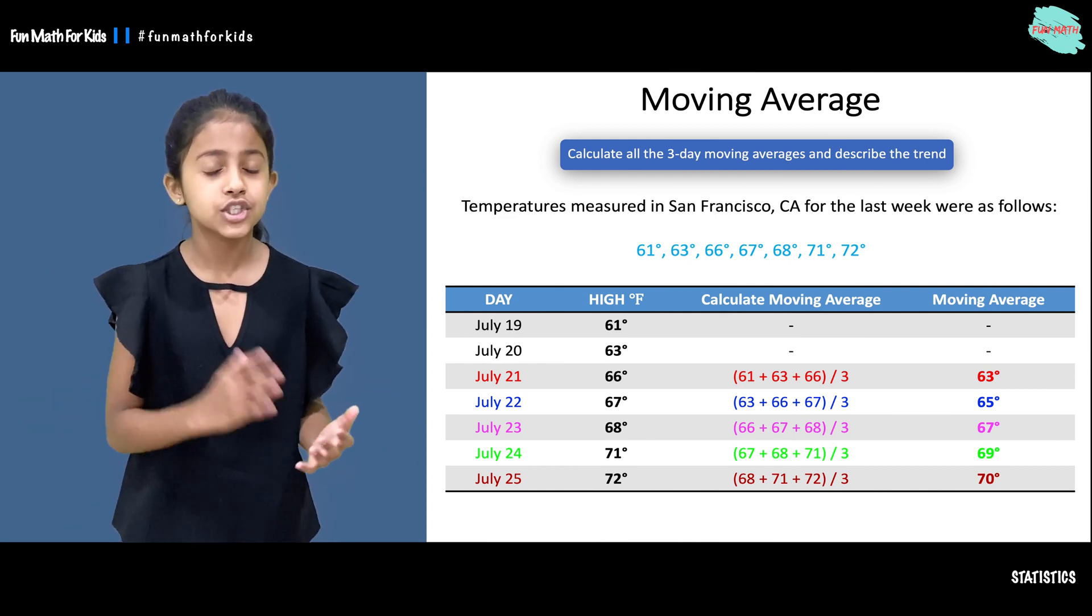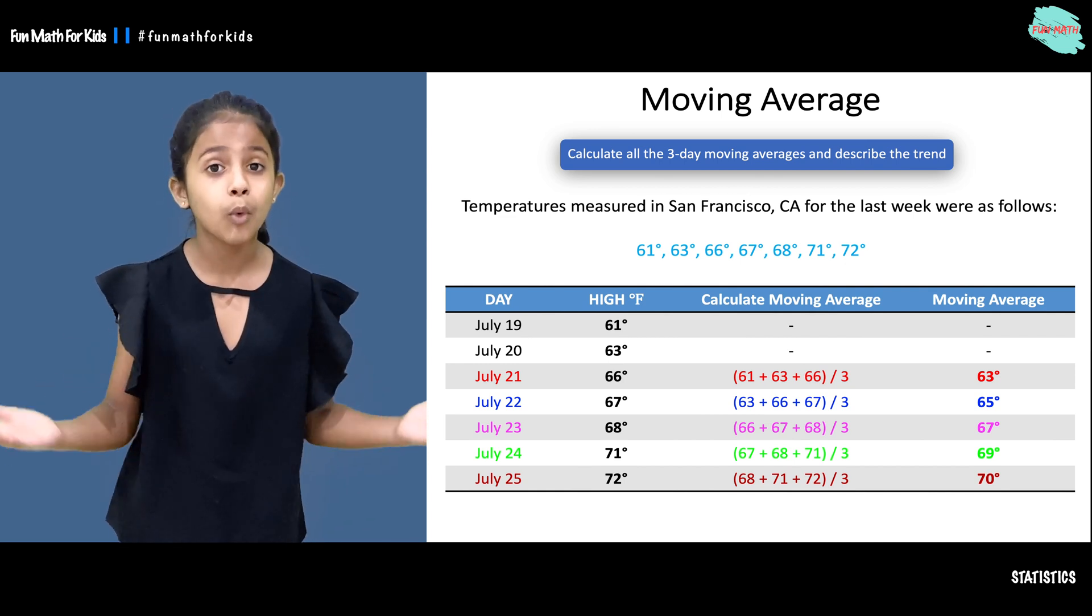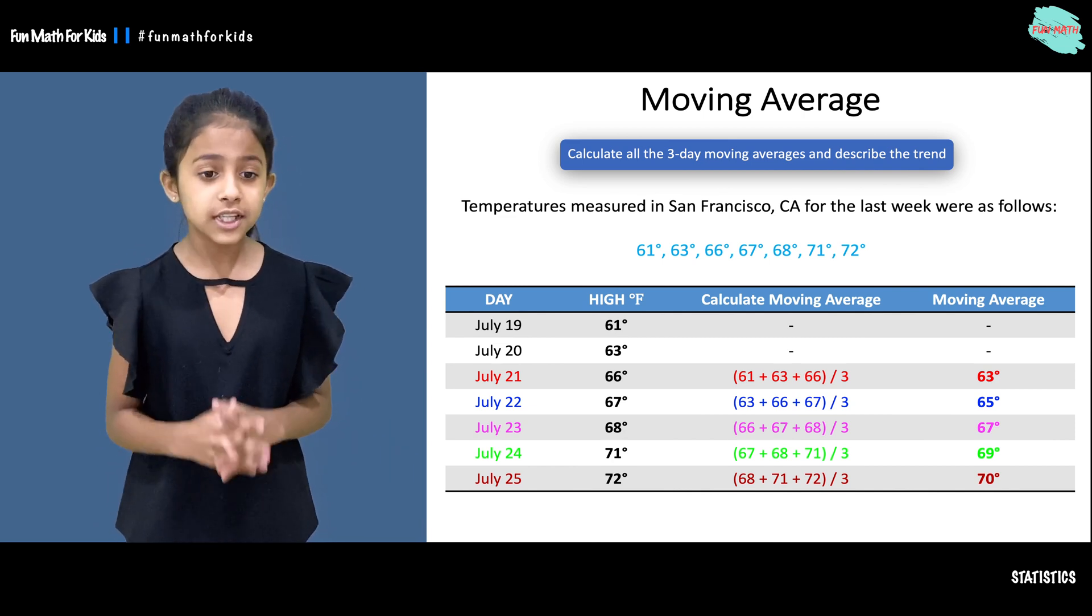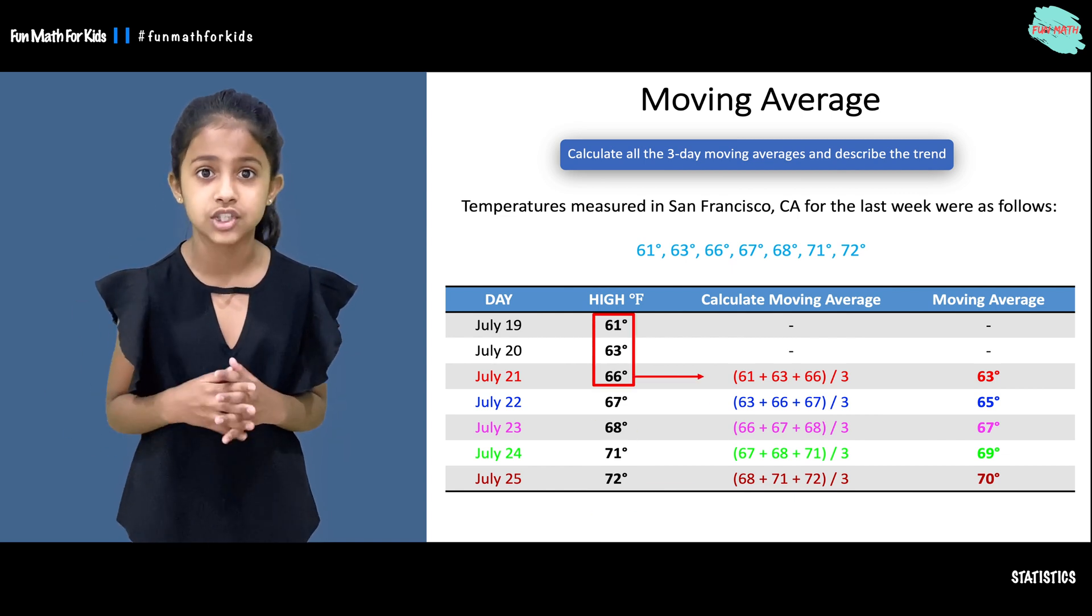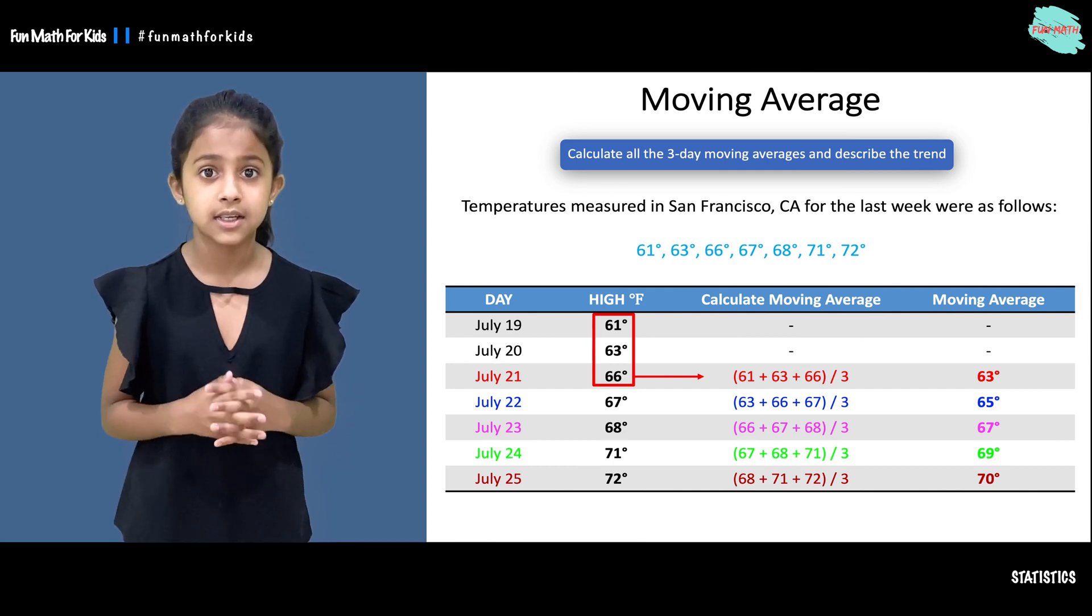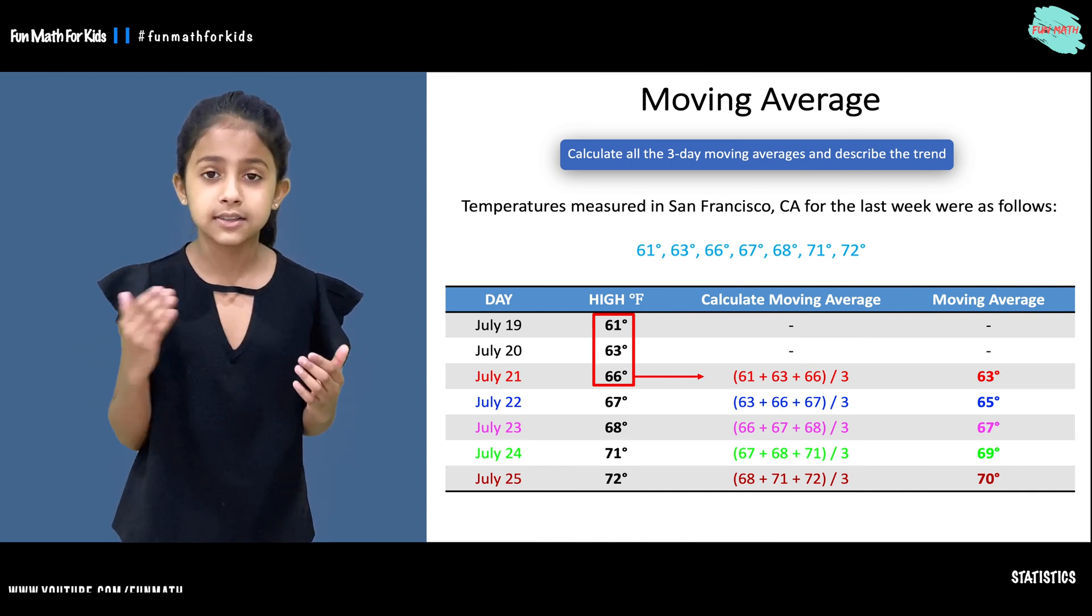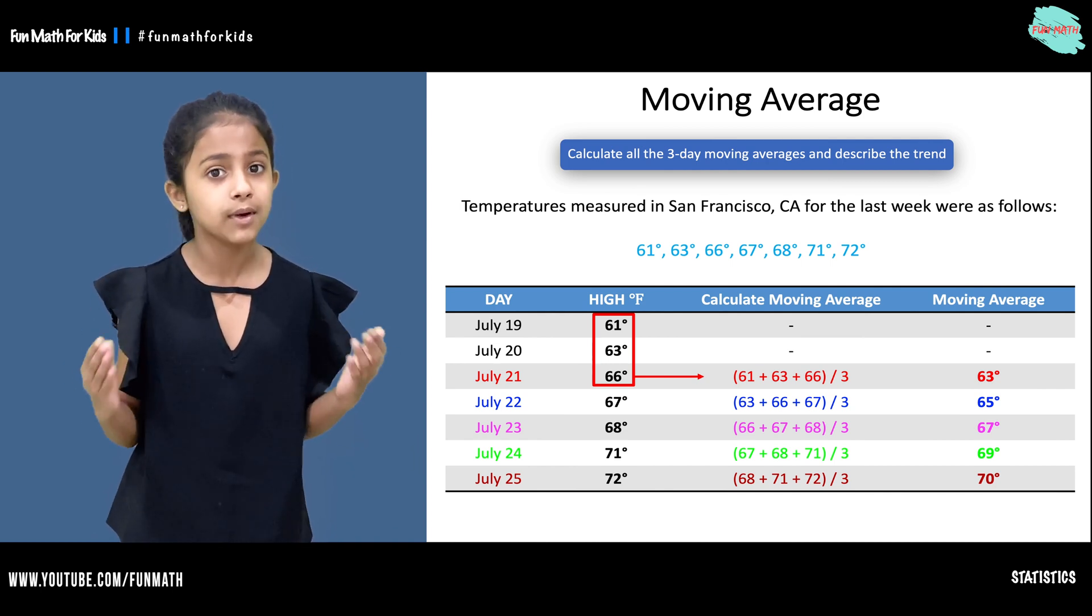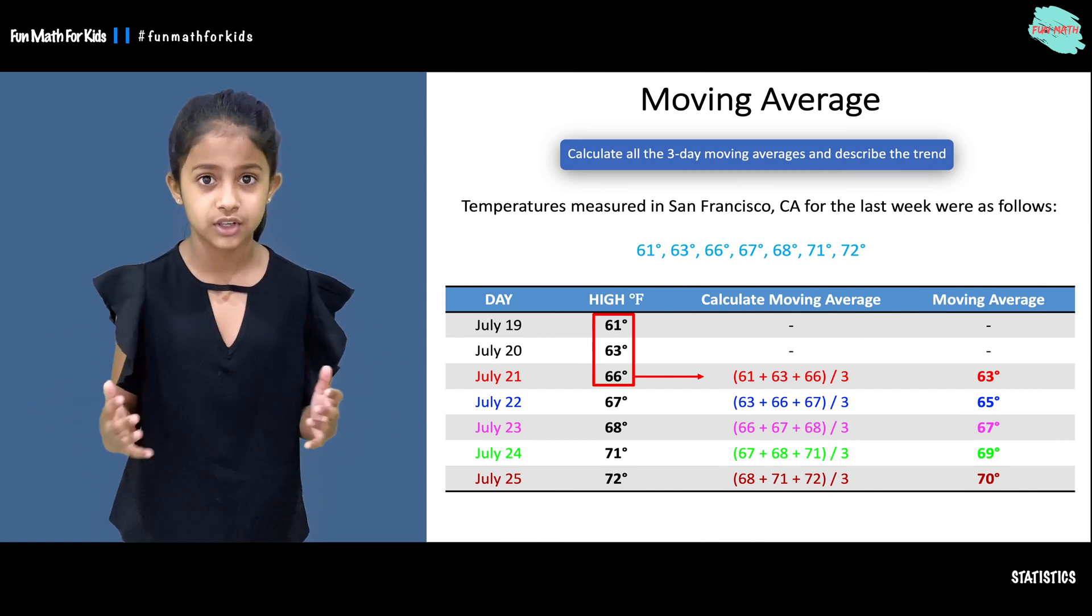You can see that July 19th and the 20th do not have moving averages. Why is that? That is because we do not have enough data. So let's check July 21st. In July 21st, we have enough data to find our average. We will find the average of the three previous days, which is 61 plus 63 plus 66 over 3. If we solve this, we will get 63 as our moving average value for July 21st.